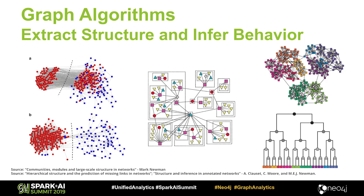What you can do with graph algorithms is help extract that structure and infer behavior. These are just a couple of pictures from different areas of academia. The middle one is a grass food web using PageRank and some community detection. There's also the ability to infer separation in the future or potential missing links. That's why graph algorithms are really quite unique — they're based on the mathematics of relationships.